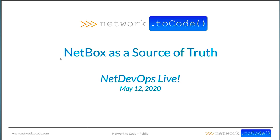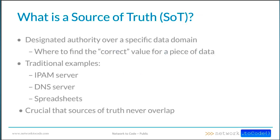I'm going to be talking about NetBox as a source of truth today. First off, you might be wondering — if you haven't heard the term before — what is a source of truth? Well, essentially, it's a designated authority over a specific domain of data. So basically, if you have two conflicting pieces of information, two different values for the same piece of data, which one is correct? How do you know which one is correct?